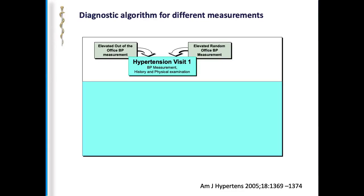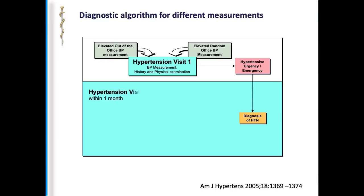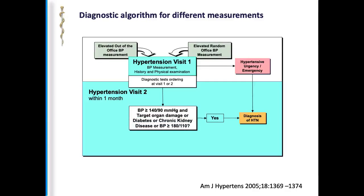There is a diagnostic algorithm introduced in the American Journal of Hypertension. If someone's out-of-office blood pressure has been pretty high, during the visit one should measure the blood pressure, get the history and physical examination of the patient. We should also try to rule out if someone is having a hypertensive urgency or emergency. Just on the first visit we should never label someone as hypertensive. Diagnostic tests can be ordered during visit one or two, with a second visit preferably within the first month.